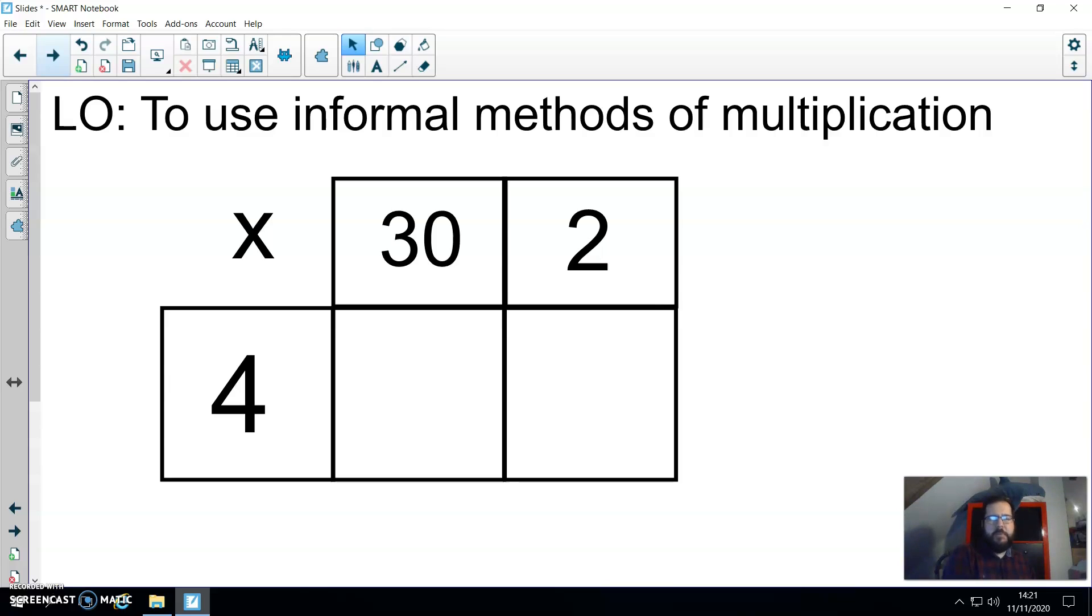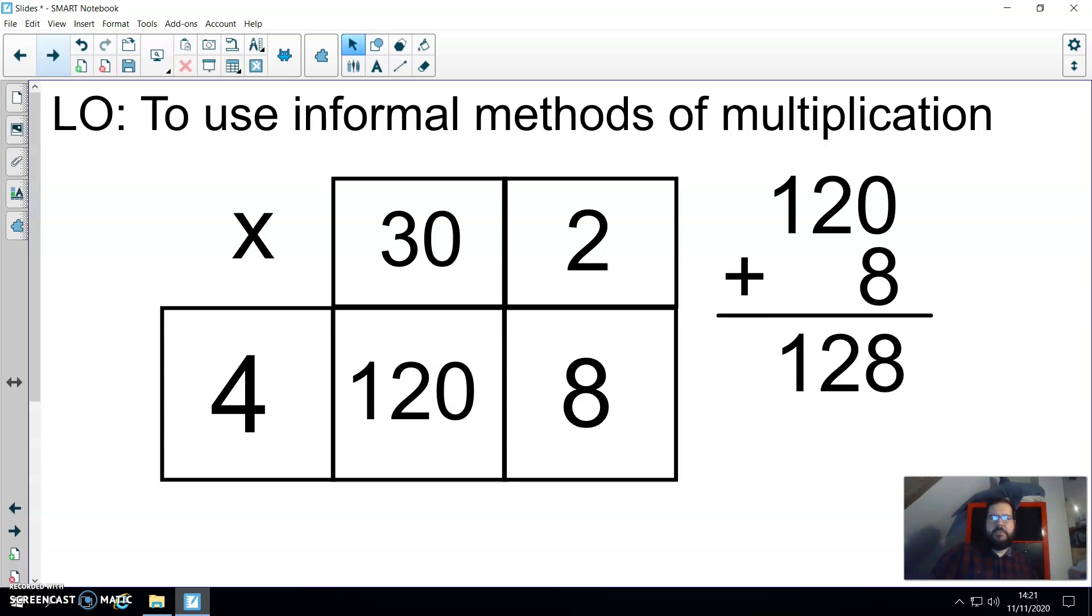So in each box, we're going to multiply the multiplier by one of the place values. So the first one will be 4 multiplied by 2 and the answer will go into the box, as you can see, is 8. The next one is 4 times 30 and as you can see that we're going to that box. Once we've filled in the box in this method, we then add the answers together. So again, 120 plus 8 becomes 128.